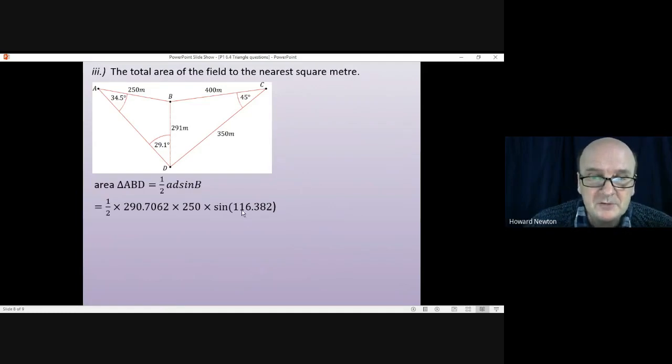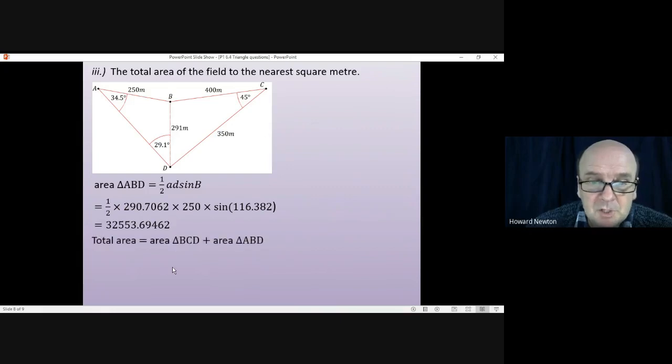Now having worked out that's 116.382, we can use the area rule that uses sine, which is ½ times this side times this side times the sine of this angle at B that we do now know. So putting all of those into the formula for the area of the triangle, we get that. That gives us again quite a long decimal. We've now got two areas we need to add together. For the time being I'd keep them accurate.